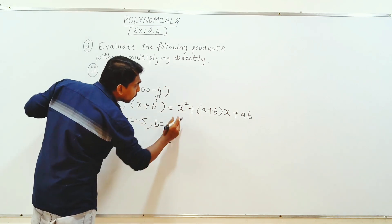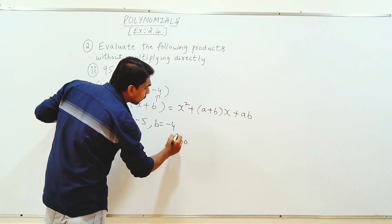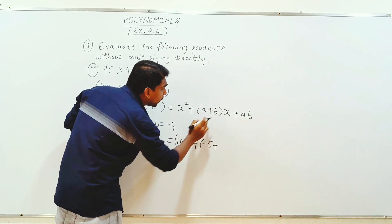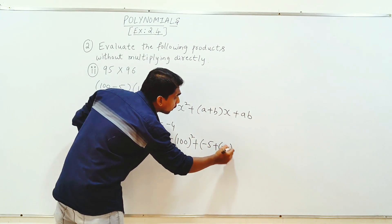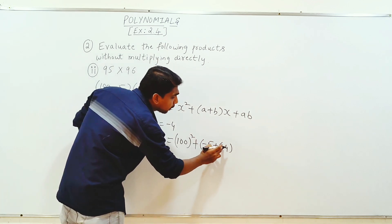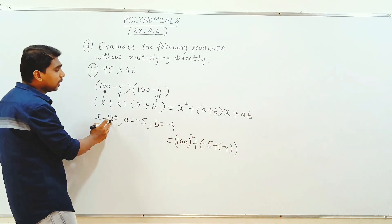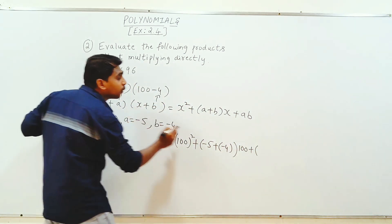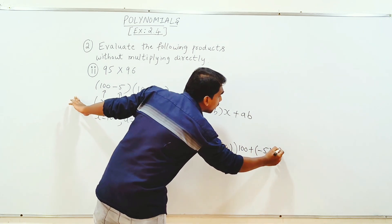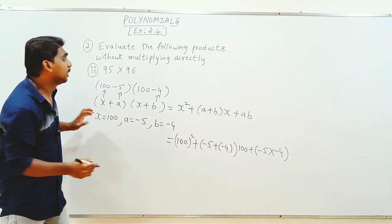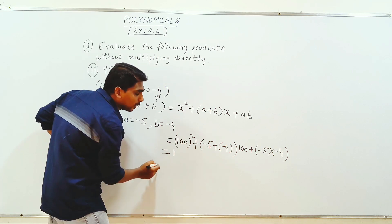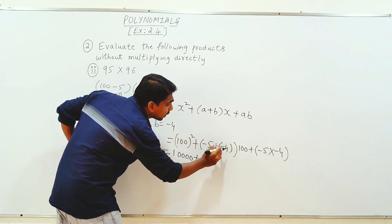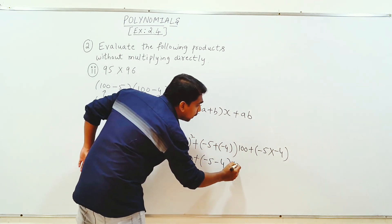Now, x is equal to 100. 100 whole square plus a value minus 5 plus, this is equal to a plus b value minus 4 into 100. Minus 5 into minus 4 into 100.